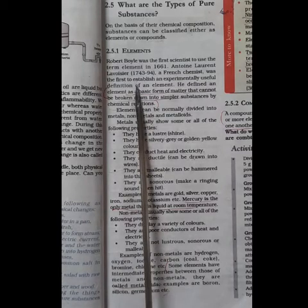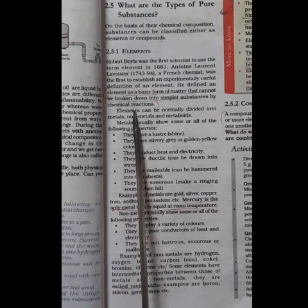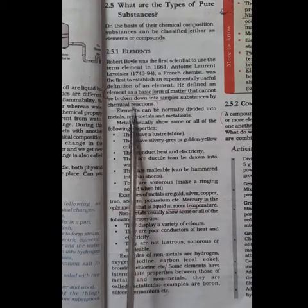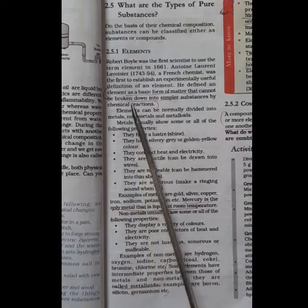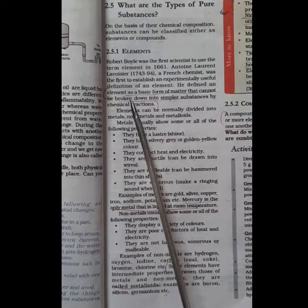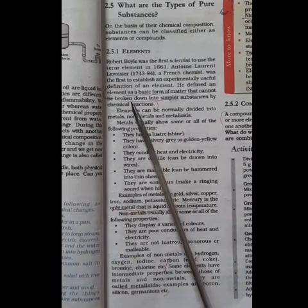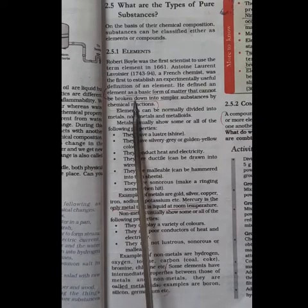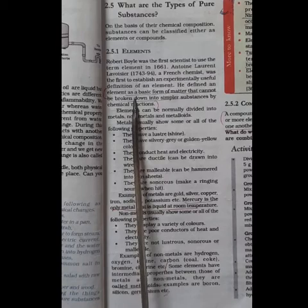Robert Boyle was the first scientist to use the term element in 1661. The number of elements known at present are more than 100. 92 elements are naturally occurring in nature, and the rest elements are made by man.